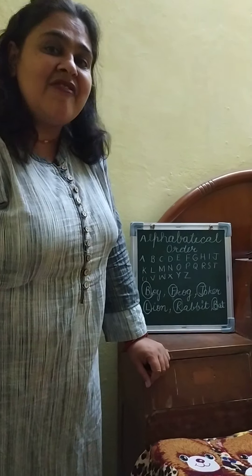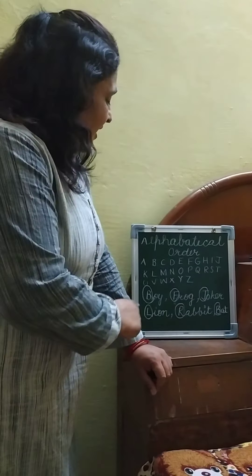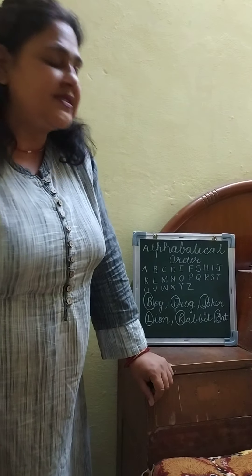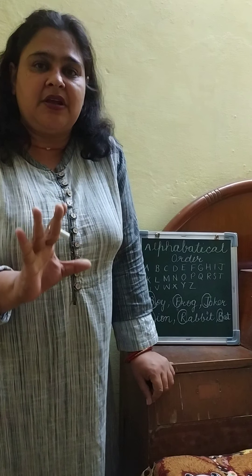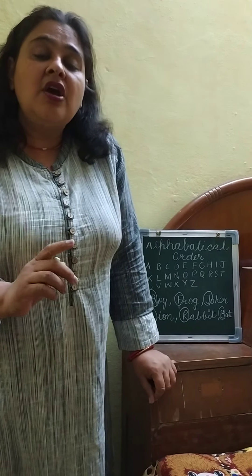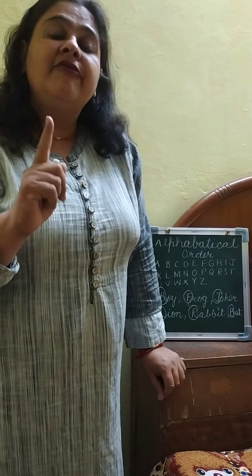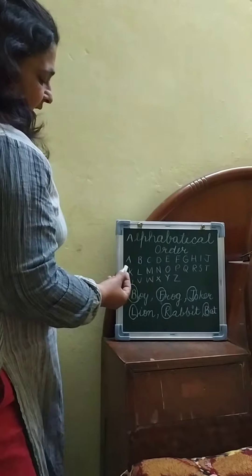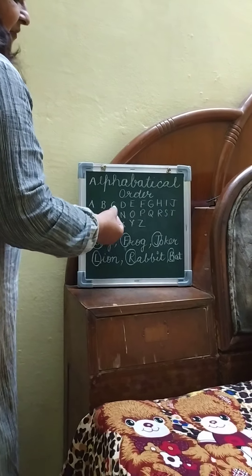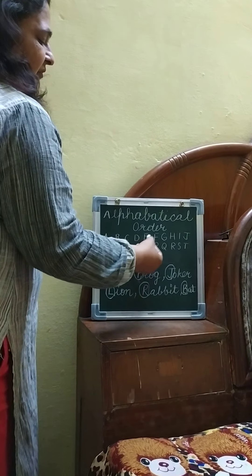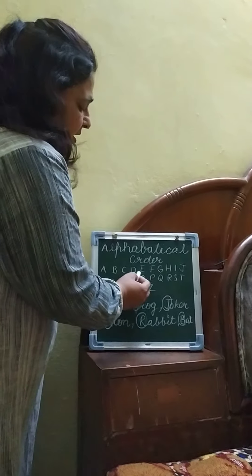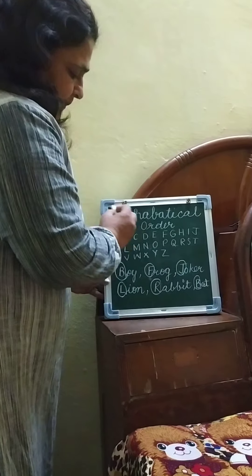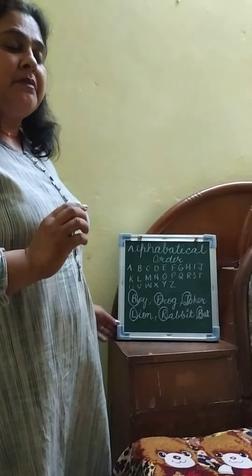Today, ma'am Radhika again in front of you with a new grammar chapter that is alphabetical order. First I am going to describe what is alphabetical order. Children, alphabetical order is arranging them in a sequence — which sequence? A to Z. Like A, then B, then C, then D, then E, then F, then G, then H. This is called the sequence of the letters, and we have to arrange them in this sequence.